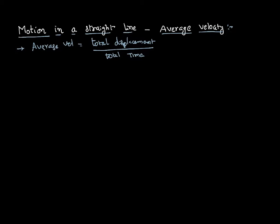Let us try to understand by considering a particular scenario. Say, you are starting from a point A and going to a point B. Assume that the total time taken for this journey is T. Half of the time you have moved with a velocity V1, and the other half of the time you have moved with a velocity V2.